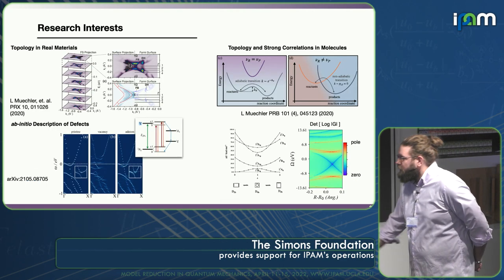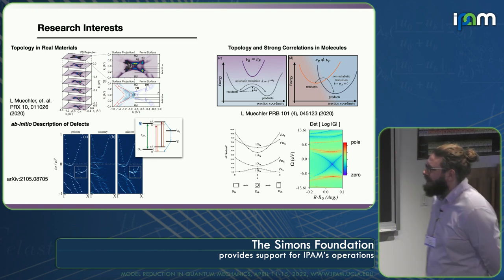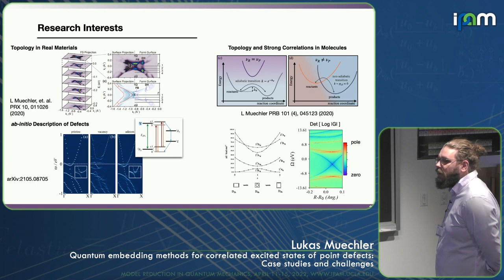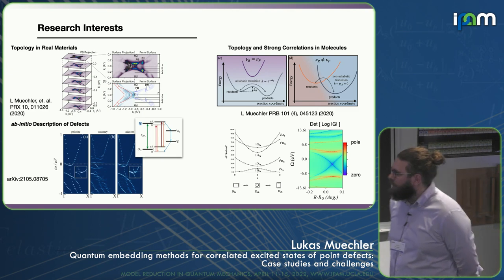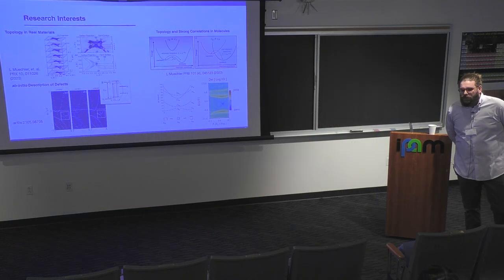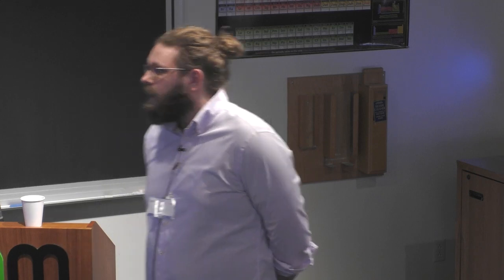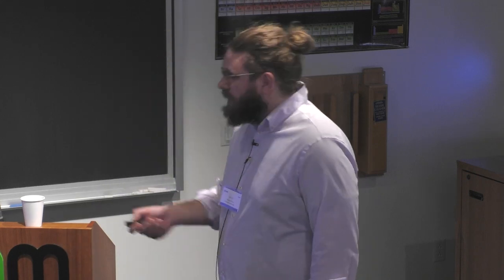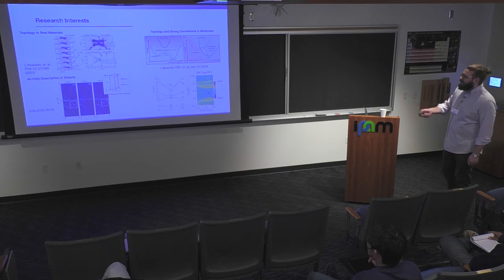As a disclaimer: what I did for a long time is more topological materials — topology in molecules and so on. But I've always been interested in quantum chemistry and ab initio description of realistic materials. That's why we recently switched gears a little bit. What I'm going to talk about today is basically some work we did on an ab initio description of defects.